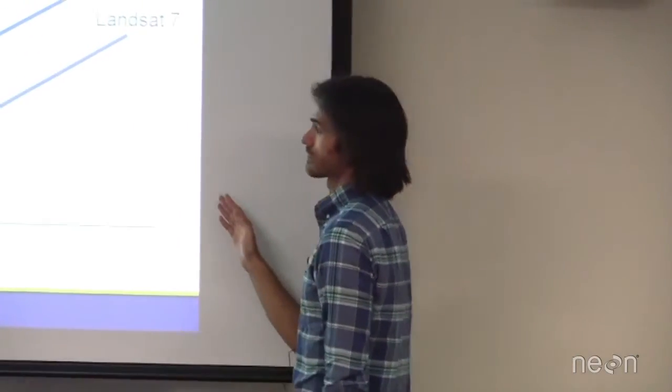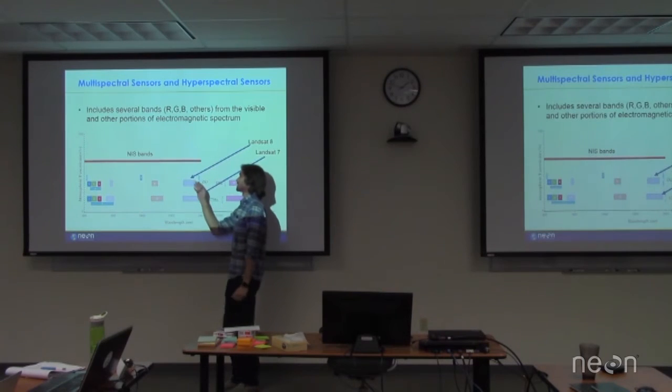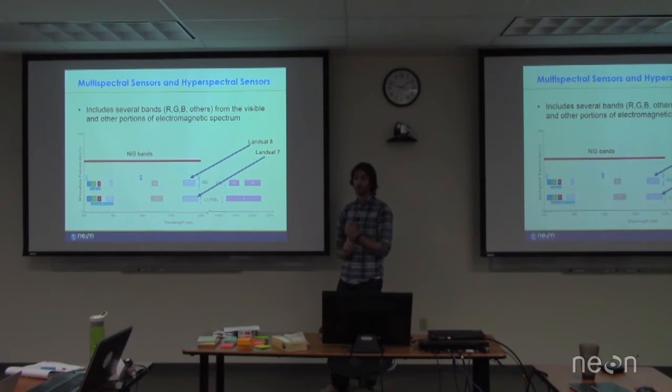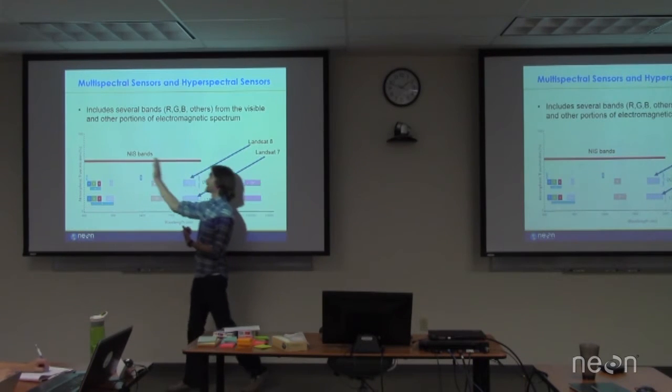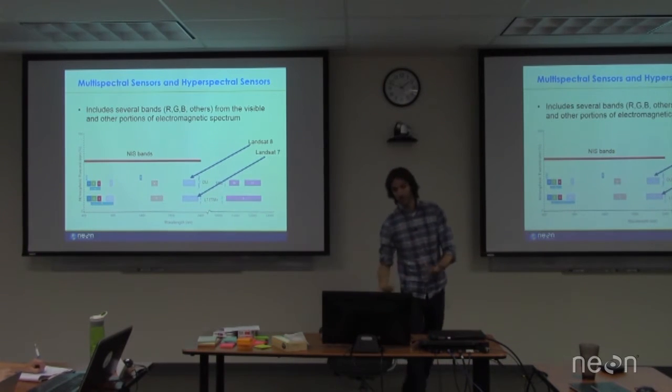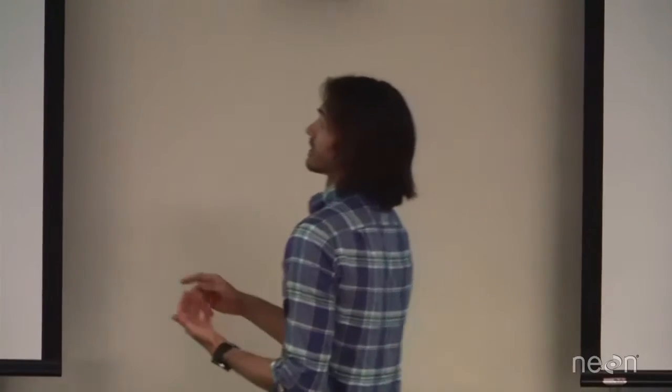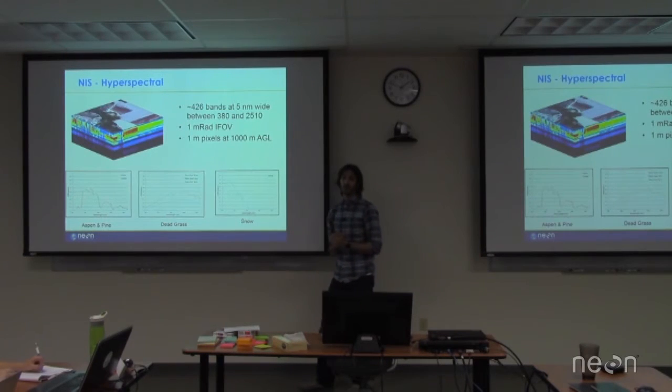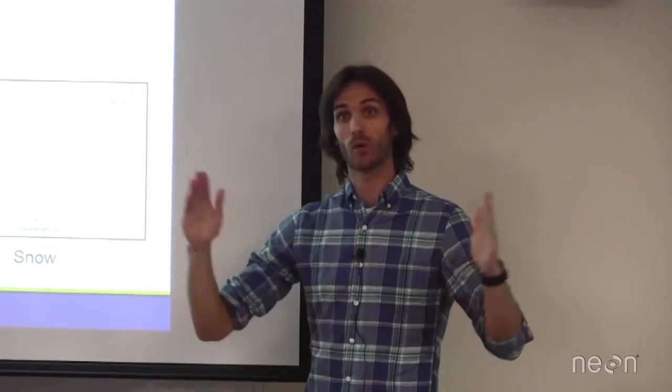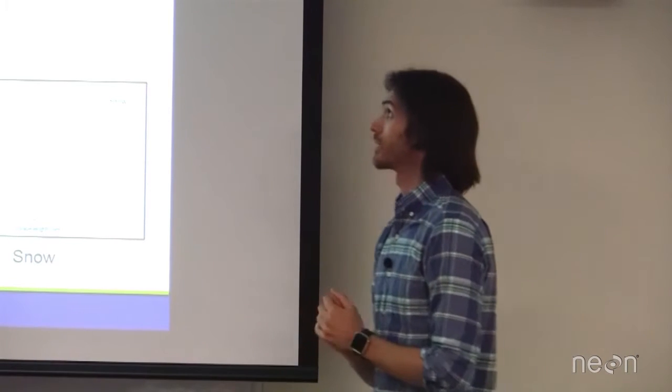So then if we look at this graph again, we see here are the NIS bands. NIS, as Nathan mentioned this morning, stands for Neon Imaging Spectrometer. This is our hyperspectral sensor. So we are collecting everything between here and here. And the main difference between us and something like Landsat is that we're collecting 426 bands at 5 nanometers wide each. So we're covering that whole array there with a whole bunch of very narrow bands.